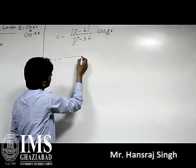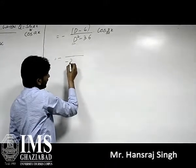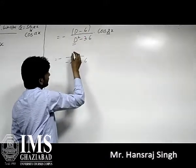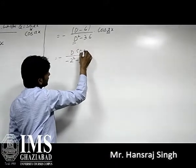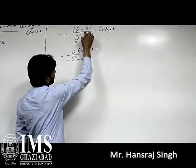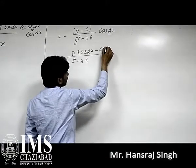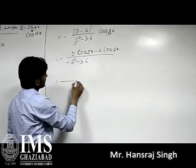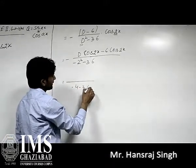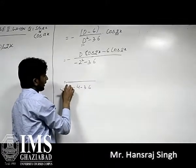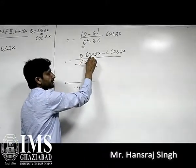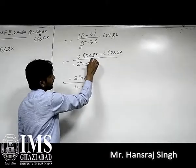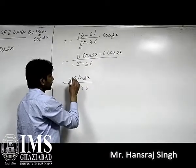This gives minus 1 upon (minus a² minus 36). Since a is 2, a² is 4, so we have minus 1 upon (minus 4 minus 36). Now we operate on cos(2x): D of cos(2x), and minus 6 into cos(2x). Differentiation of cos(2x) gives minus sin(2x), multiplied by 2.